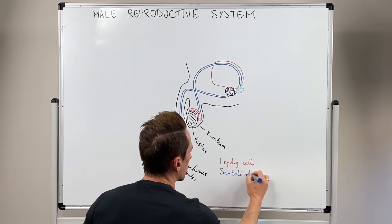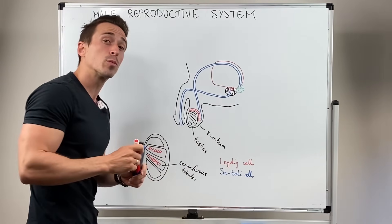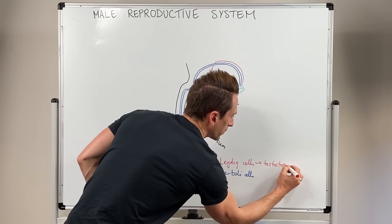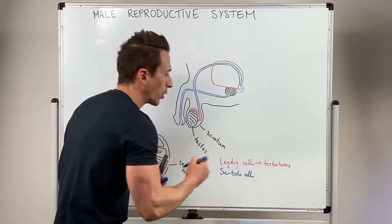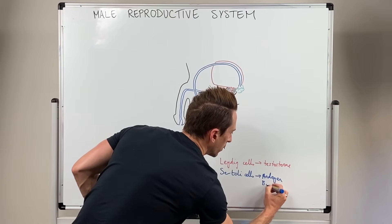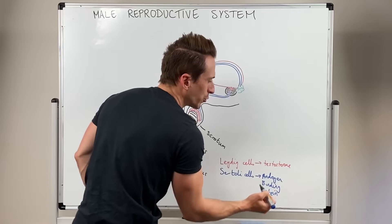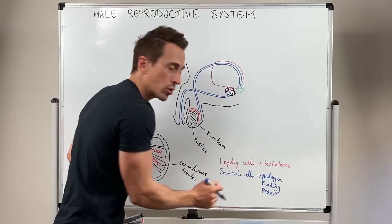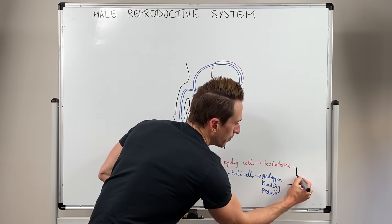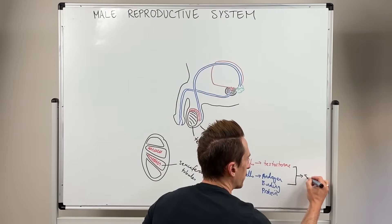What do these cells do within the testes, specifically at the seminiferous tubules? The Leydig cells produce testosterone. The Sertoli cells produce something called androgen binding protein, also known as ABP. An androgen is a male sex hormone, i.e. testosterone. So ABP binds to testosterone, and together they promote the production of sperm.